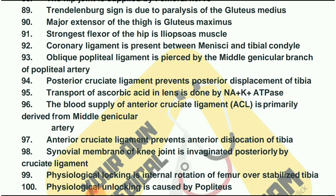The strongest flexor of the hip is the iliopsoas muscle. The strongest primary ligament is present between the menisci and tibial condyle. The oblique popliteal ligament is pierced by the middle genicular branch of the popliteal artery. The posterior cruciate ligament prevents posterior displacement of the tibia. Transport of ascorbic acid in the lens is done by sodium-potassium ATPase.